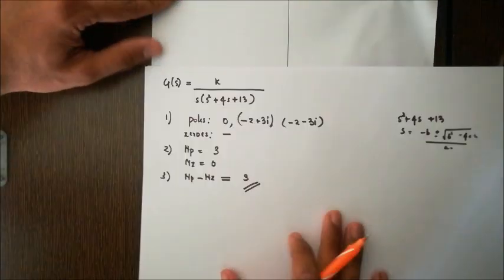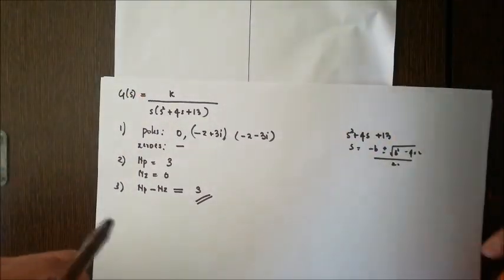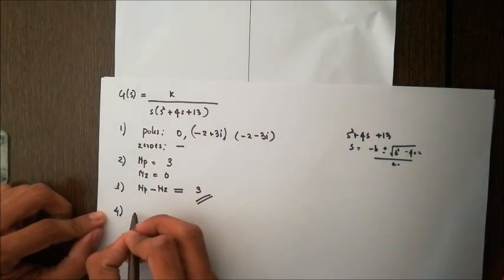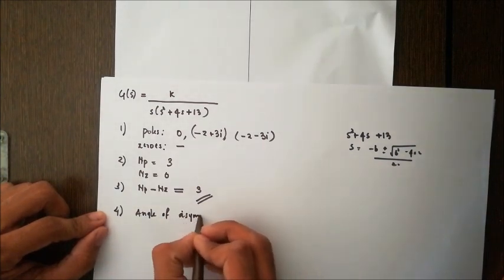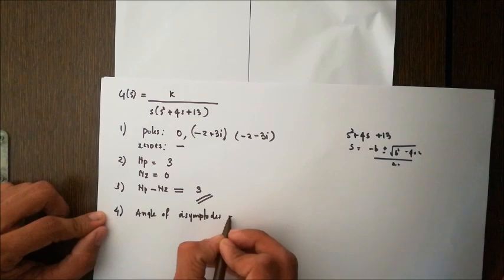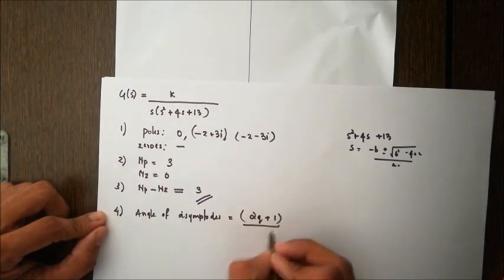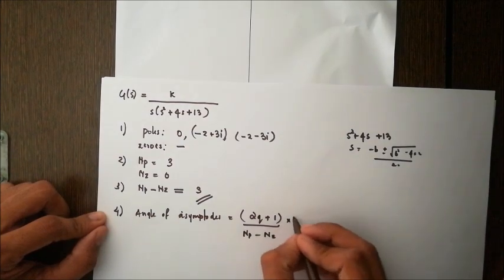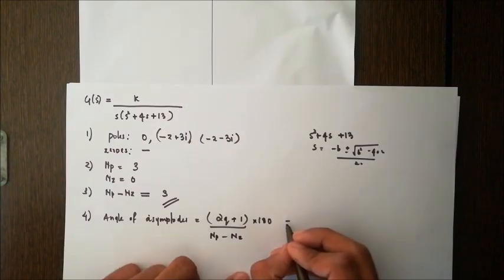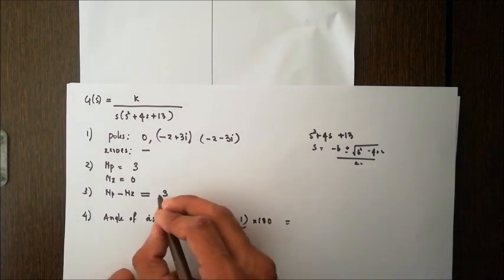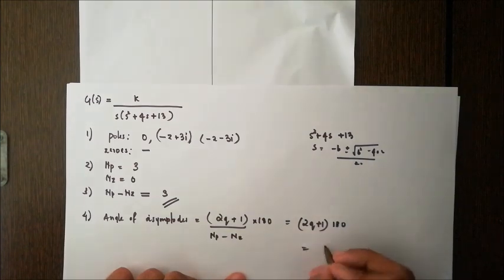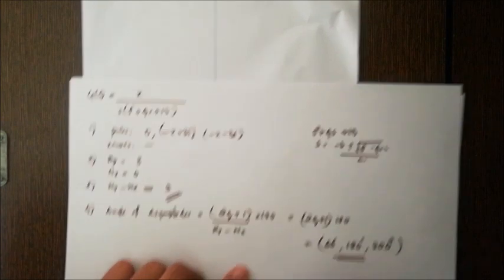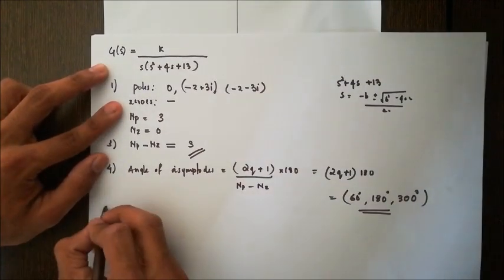Putting that aside, we return to our equations. Now we find the angle of asymptotes. There are three asymptotes. The formula is (2q + 1) / (Np - Nz) × 180. Here, Np - Nz = 3, so (2q + 1) / 3 × 180. As in the previous case, we get angles of 60°, 180°, and 300°.